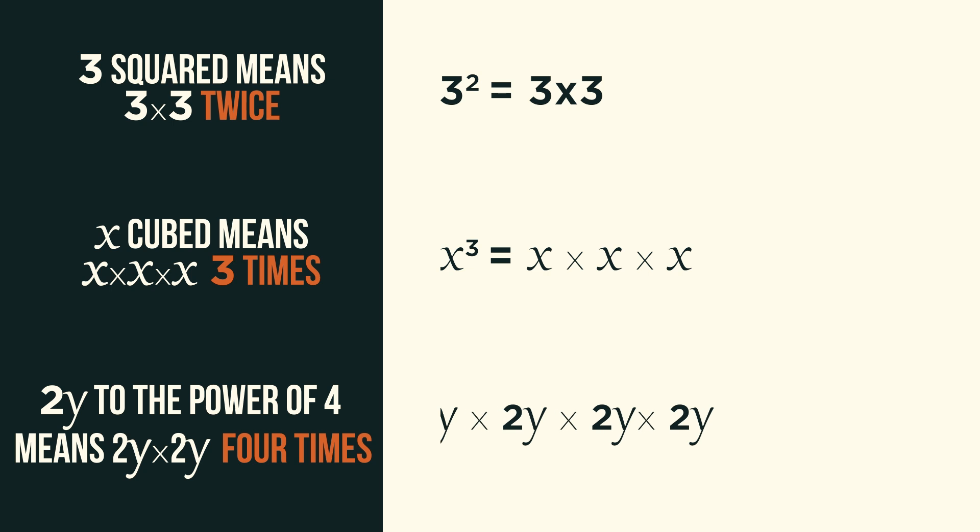And 2y to the power of 4 means 2y multiplied by 2y, 4 times.